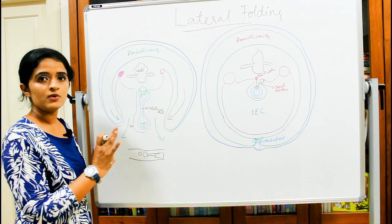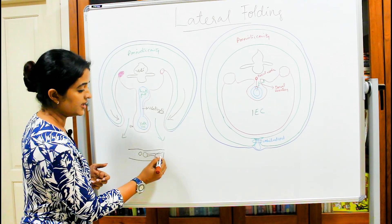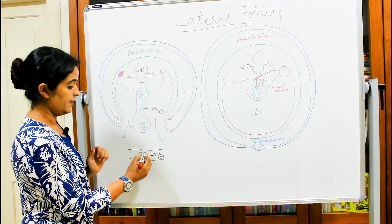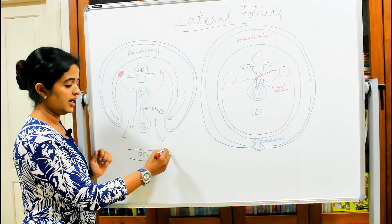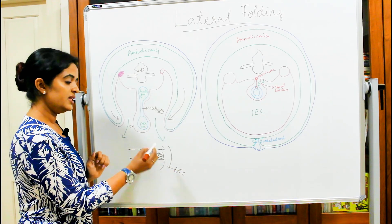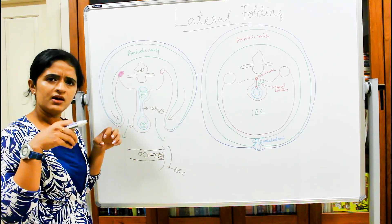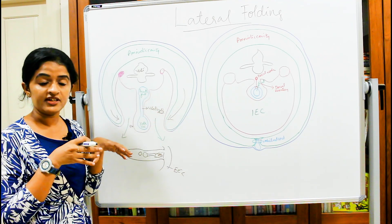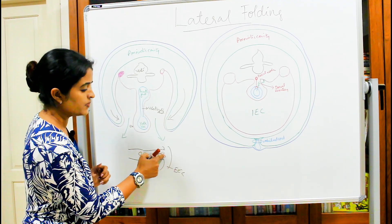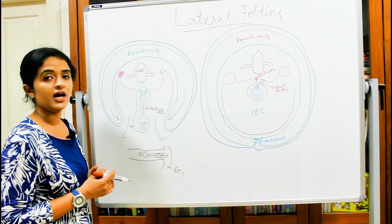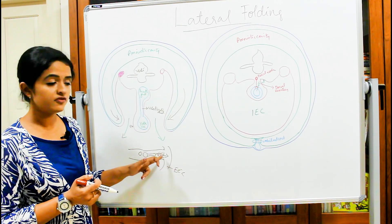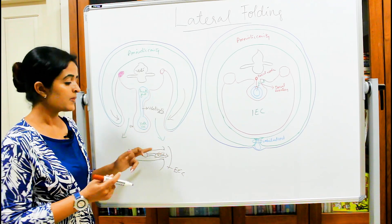The intra-embryonic mesoderm, like the extra-embryonic mesoderm, also has a cavity developing within the lateral plate. So the intra-embryonic mesoderm is divided into paraxial, intermediate, and lateral plate, and on the outermost aspect we have the extra-embryonic mesoderm and extra-embryonic coelom. Within the lateral plate mesoderm, small cavities develop which coalesce to form a larger cavity known as the intra-embryonic coelom, which communicates with the extra-embryonic coelom.